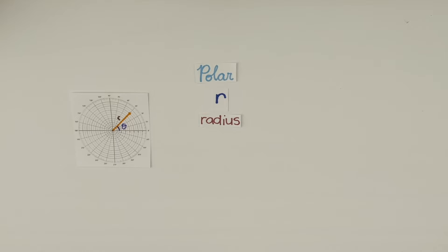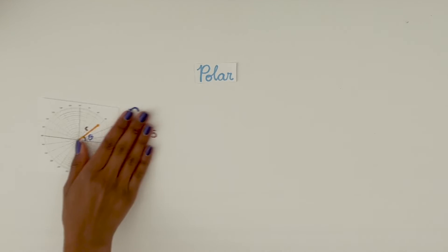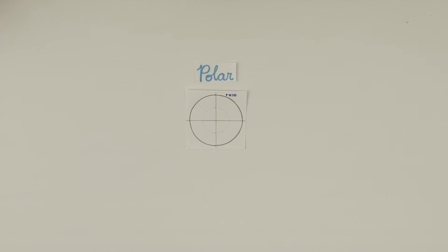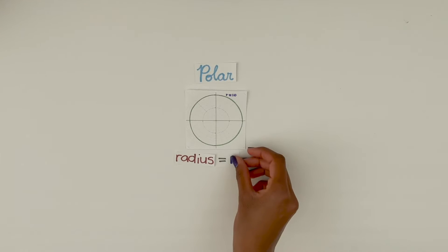You might be able to see it more clearly through an example. When we graph r equals 10, let's say, this is what we have. And what shape is this? A circle! Because we are assigning the value of r to be the same for all values of theta, it makes a perfect circle with the radius of 10.